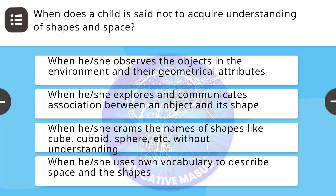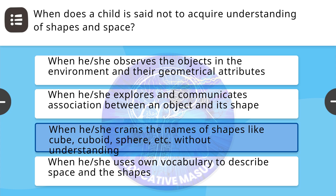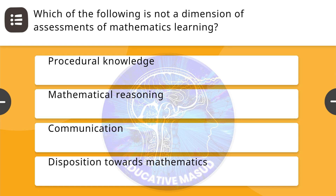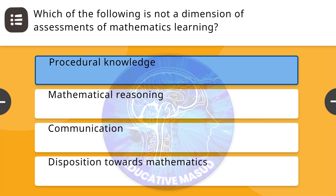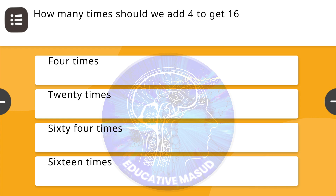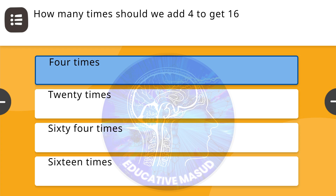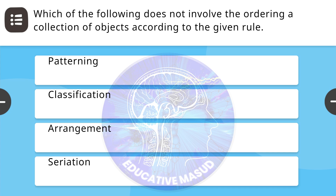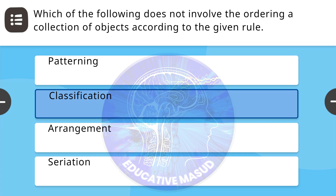Next question: when is a child said not to acquire understanding of shapes and space? Correct answer is when he or she cramps the names of shapes like cube, cuboid, sphere, etc. without understanding. Next question: which of the following is not a dimension of assessment of mathematics learning? Correct answer is procedural knowledge.